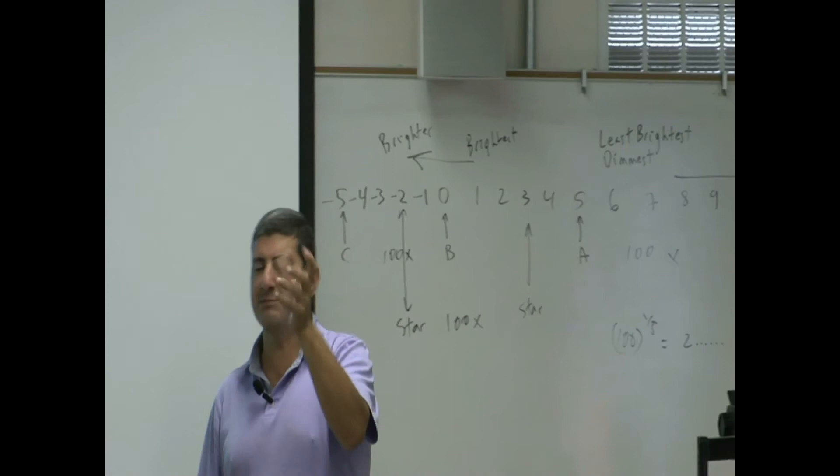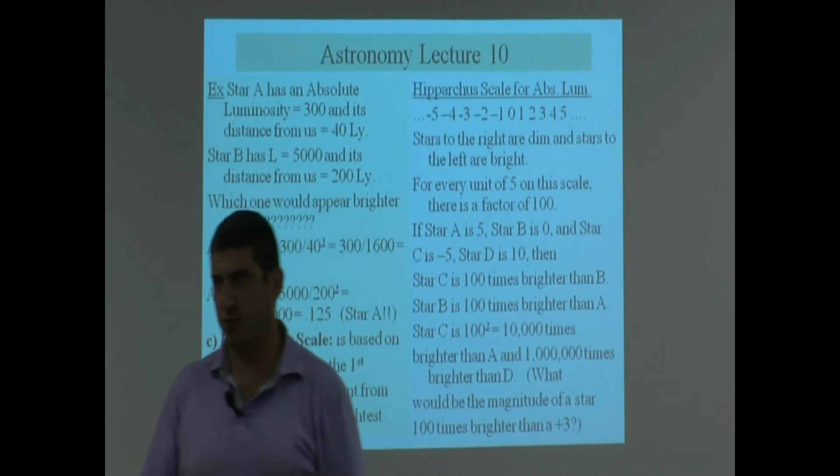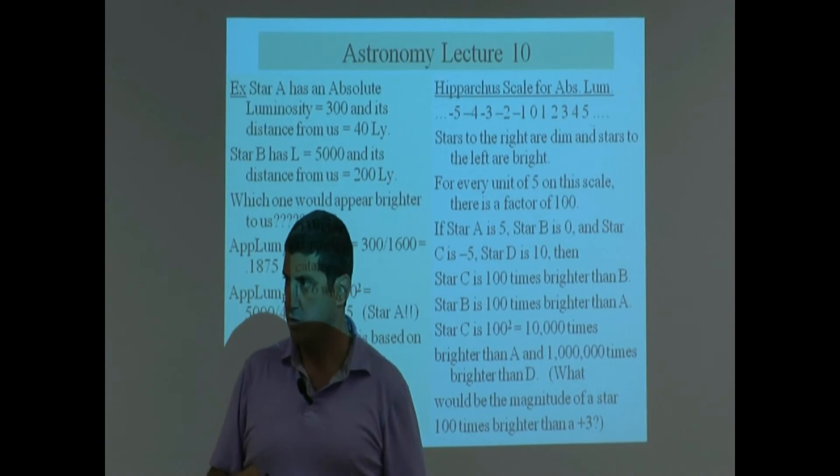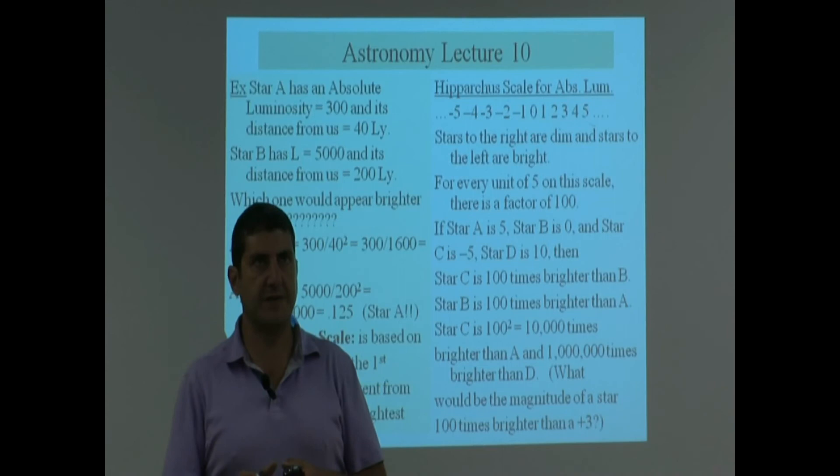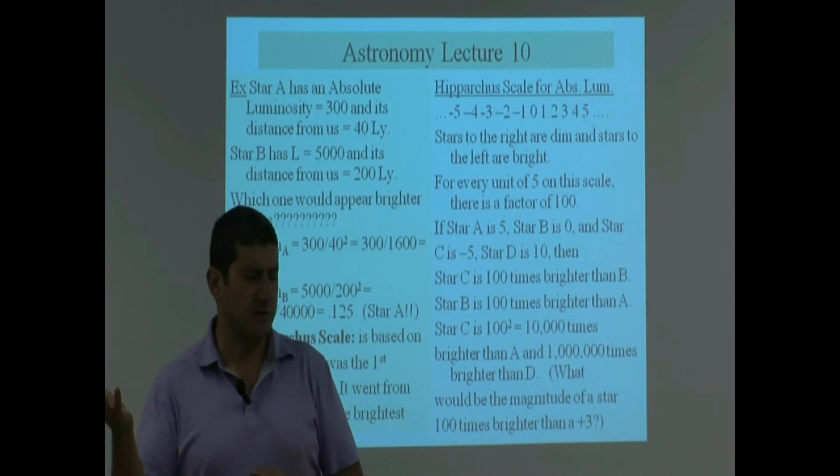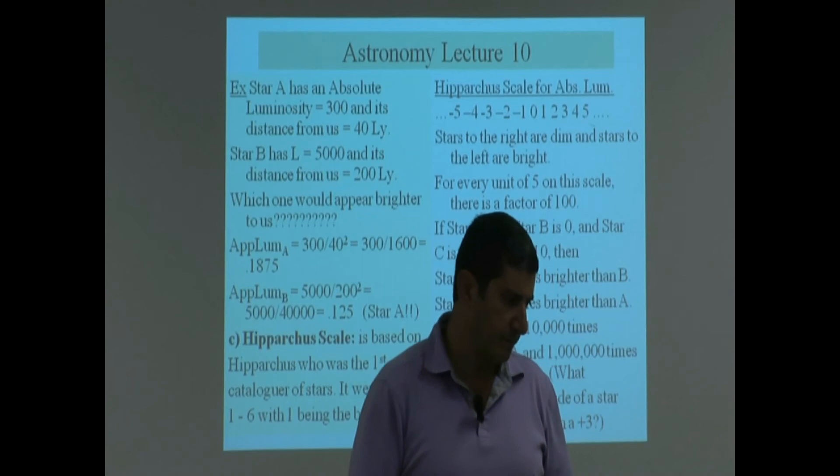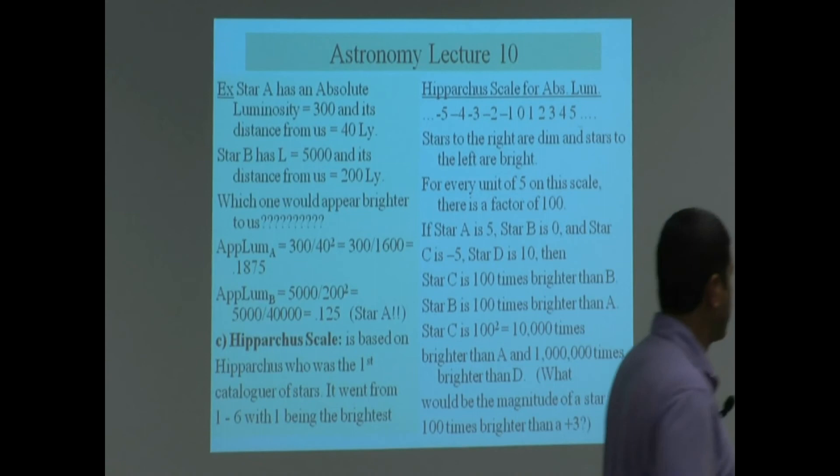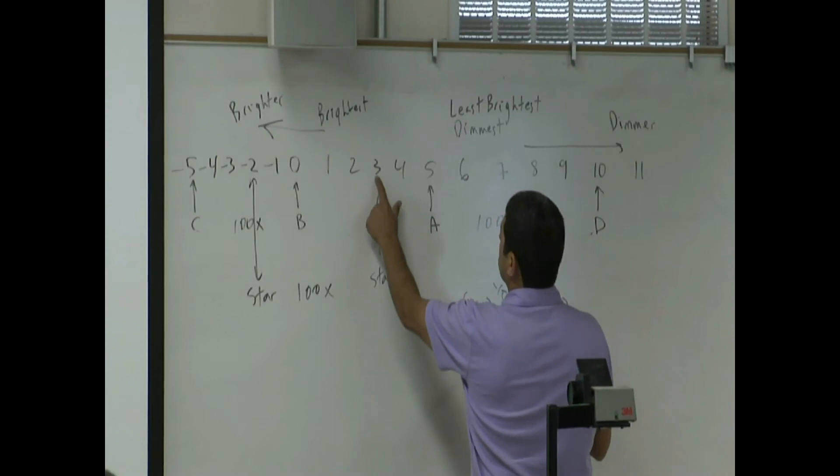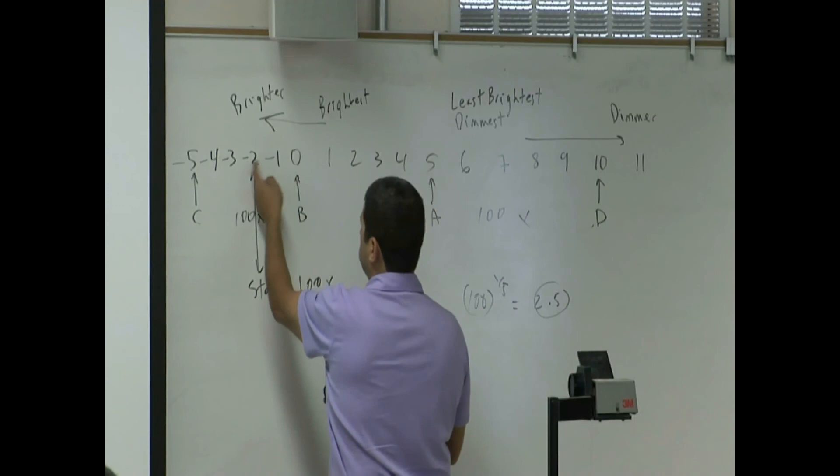Can you do that on the calculator? 100 to the power one-fifth. One over five. Two-point-five. So roughly two-point-five. So this is two-point-five brighter than that. This is two-point-five brighter than that. Two-point-five brighter than that. So when you do five of those two-point-fives, you get 100. That's the way it works.